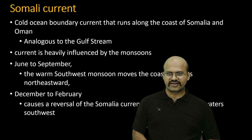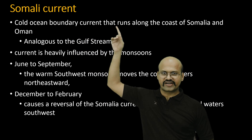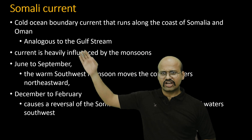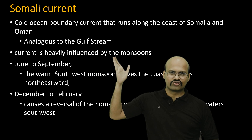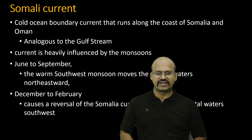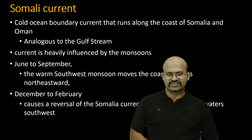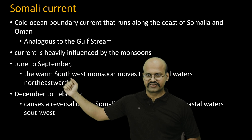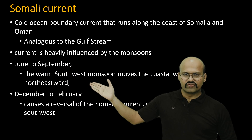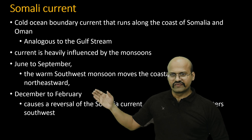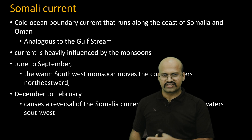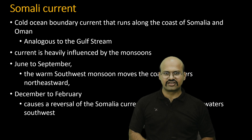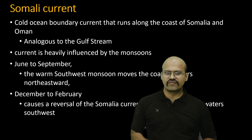Now let's discuss the Somali current. It is a cold ocean boundary current that runs along the coast of Somalia and is analogous to the Gulf Stream in the Atlantic Ocean. It is heavily influenced by monsoon winds. During summer it flows from Somalia towards the Indian subcontinent, while in winter it flows from the Indian subcontinent towards Somalia — a definite change in direction because of monsoon winds.